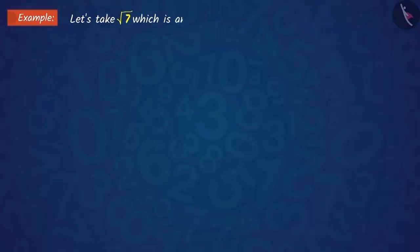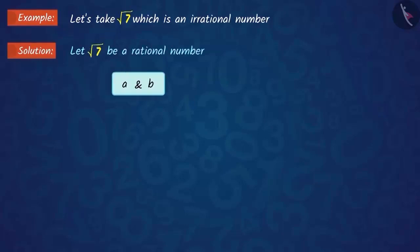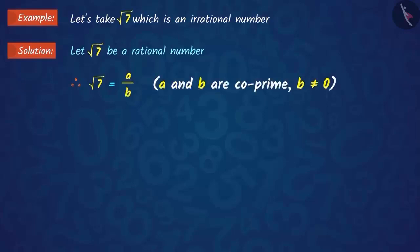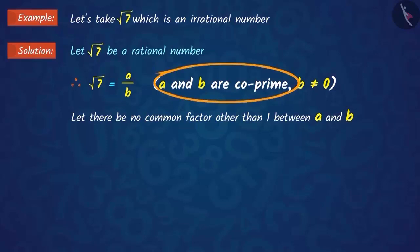Let us consider the square root of 7, which is an irrational number. Suppose that √7 is a rational number. Therefore, we can obtain two integers a and b such that √7 equals a upon b, and b is not equal to 0. Suppose a and b do not have any common factor other than 1, where a and b are co-prime.